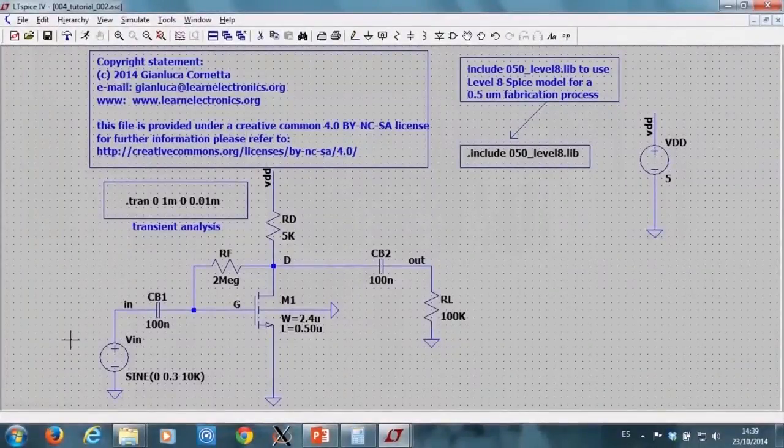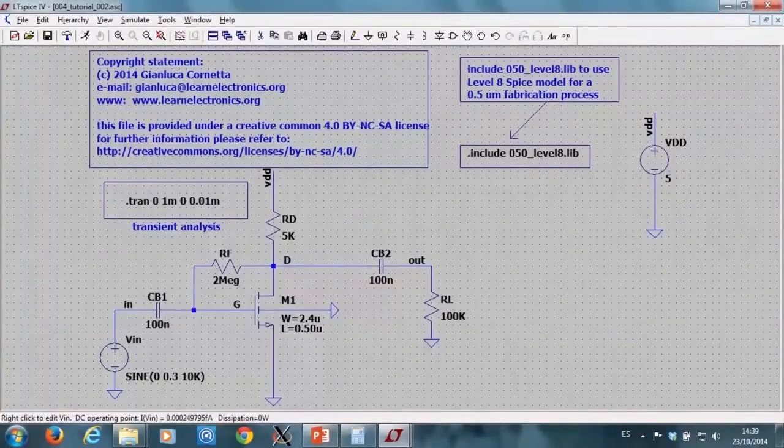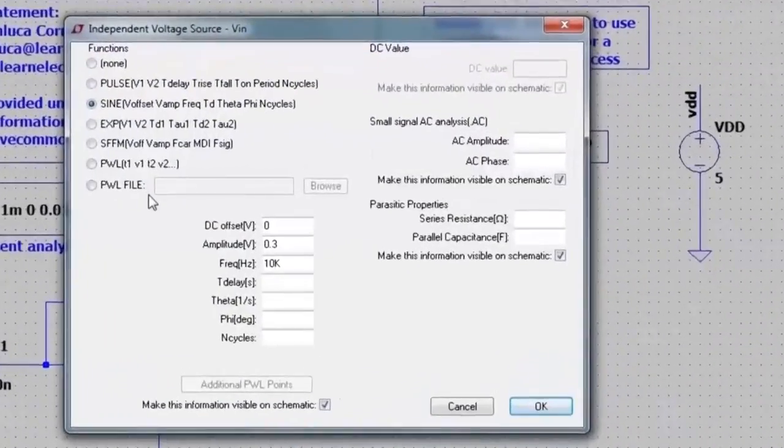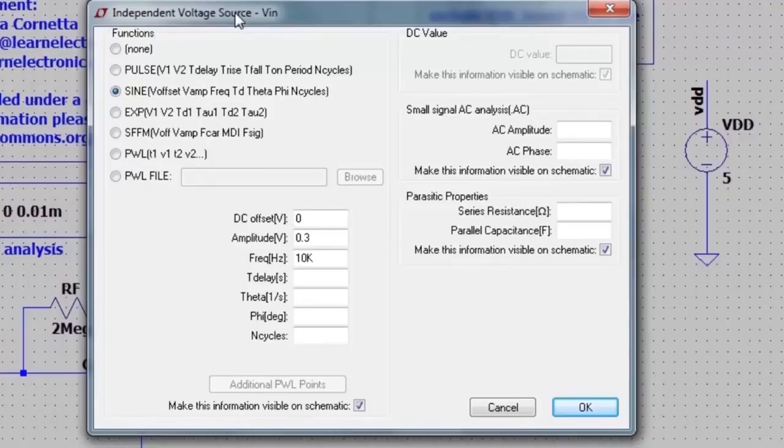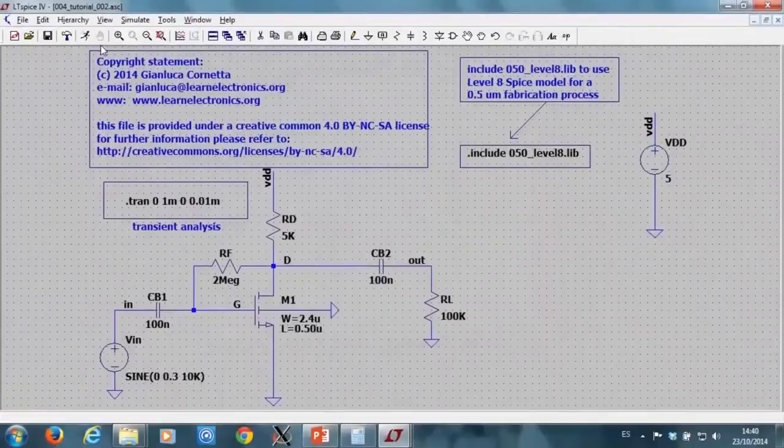To configure the input source with a sinusoidal voltage, I right-click on my voltage generator, voltage source, and select the advanced option to open the voltage source configuration window. I choose a sine function and set the DC offset to 0 volts, the peak amplitude to 0.3 volts, and the frequency to 10 kilo hertz.